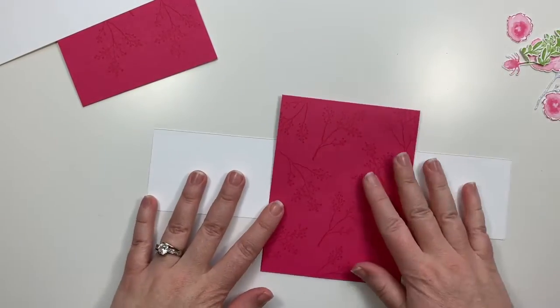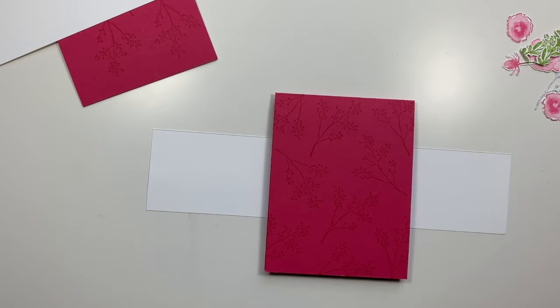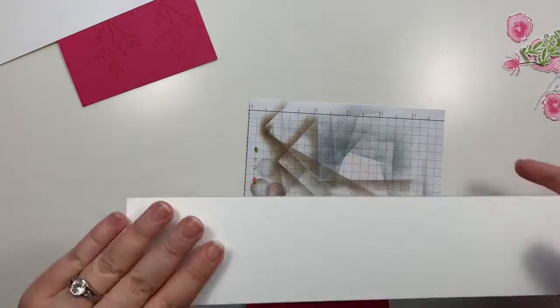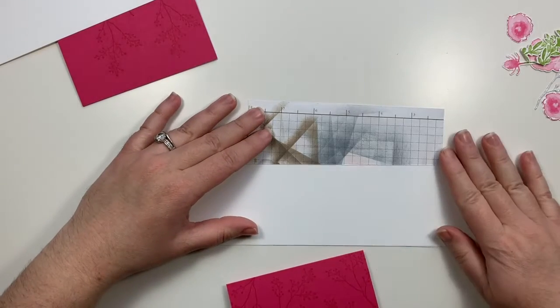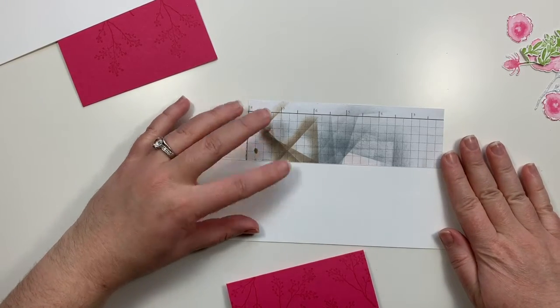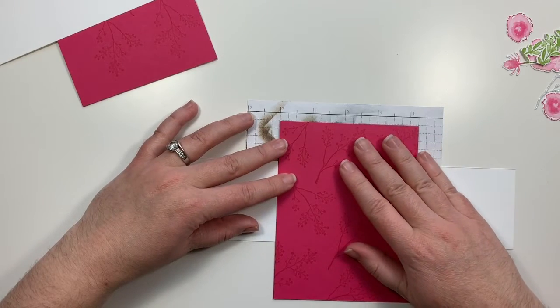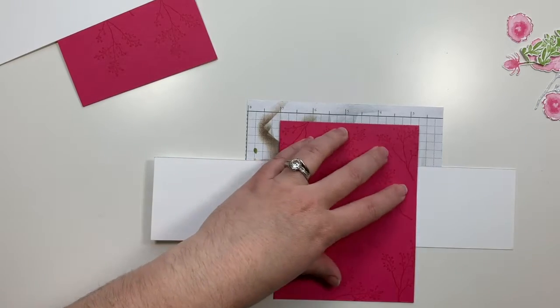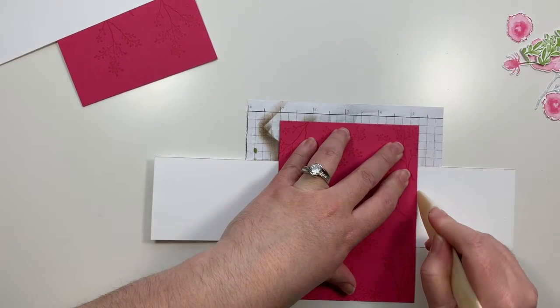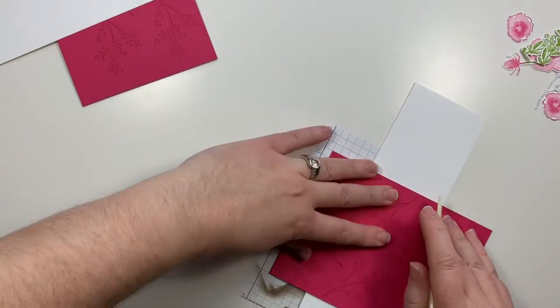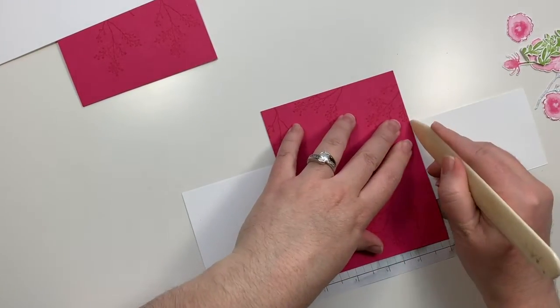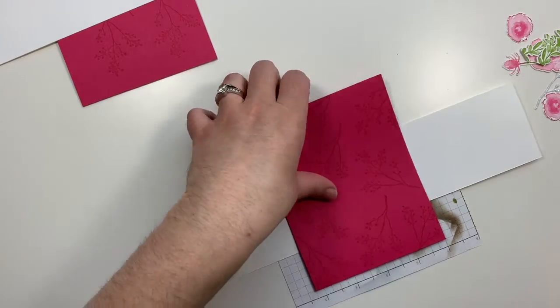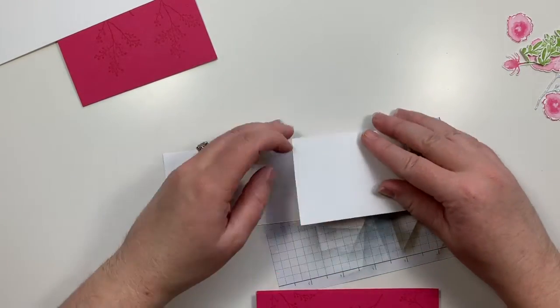So the first belly band that we're going to do, you're going to want a piece of grid paper so that you can use it to line up your card and your belly band so that you have a nice straight fold. And it doesn't have to be a big piece as you see here, you just need enough to line it up. And on this one, I'm just going to use my bone folder to do a slight crease on either side of the card. And I like this method because you don't have to measure anything and you can just really fold it around the card and you're done.